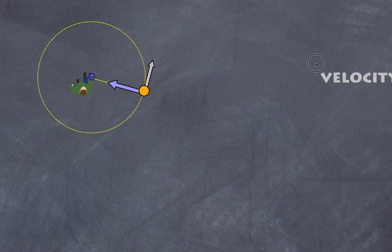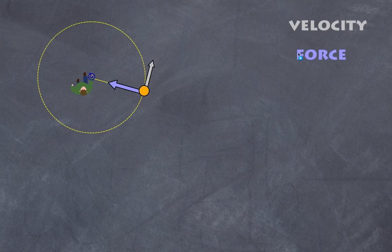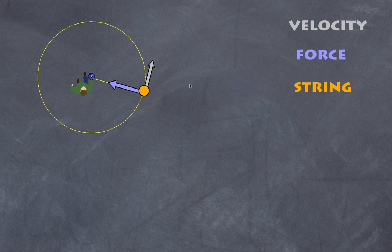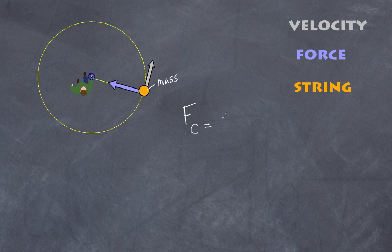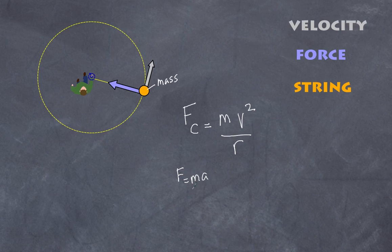Now let's look at the key quantities: we have the velocity, the force, and the string representing the radius of the circle. Combined with the mass of the object, these form a formula. The centripetal force F_c equals mass multiplied by velocity squared over r: F_c = mv²/r. Since F = ma, we can see that the centripetal acceleration equals v²/r.